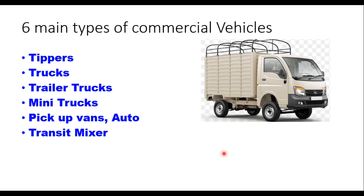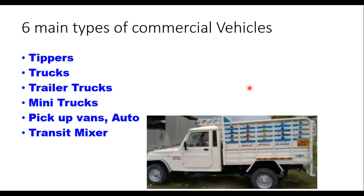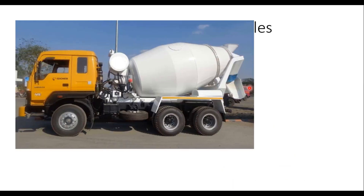Mini trucks are used for transportation of goods or sometimes even passengers. Same is the case with pickup van — they are used for cargo as well as for passengers. Transit mixer is a multipurpose device used to transport concrete mortar from a concrete batch plant. So these are the six types of commercial vehicles broadly classified in India.